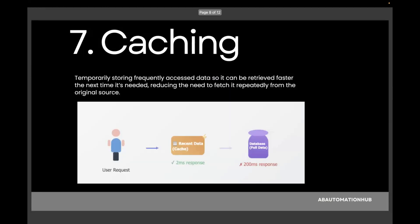The next topic is caching. Caching is temporarily storing frequently accessed data so it can be retrieved faster the next time it's needed, reducing the need to fetch it repeatedly from the original source. Imagine a student asked what the capital of China is — the first time they look it up and say Beijing, but next time they remember the answer and reply instantly without looking it up again. Similarly, on the web, your browser saves images and page layouts from websites you visit, so the next visit loads them from local storage — much faster, with no need to repeatedly download the same files.